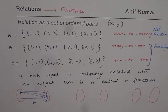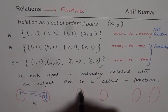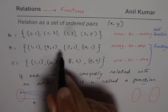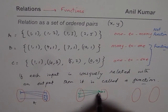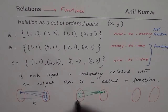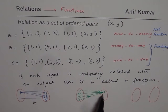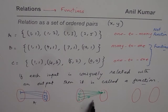For relation B in the mapping diagram: 1 is related with 1, 4 is related with 1, 7 is related with 1, and 10 is related with 1. The arrow shows the relation going to the output side. The important thing here is each input has exactly one output — so this is a function.